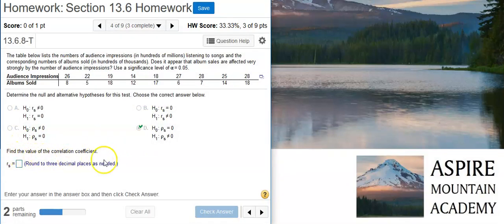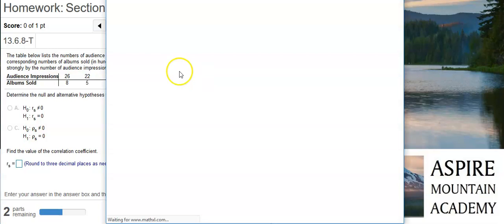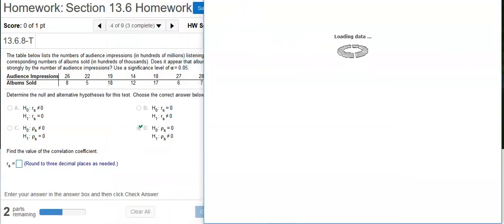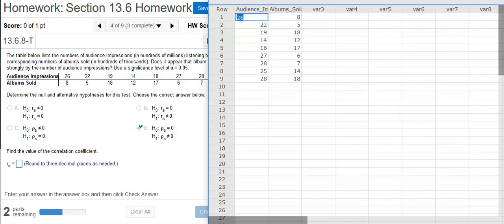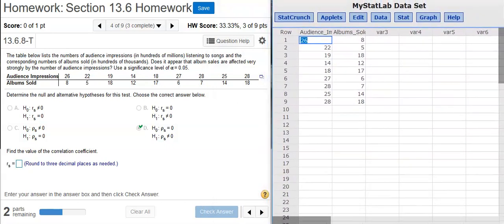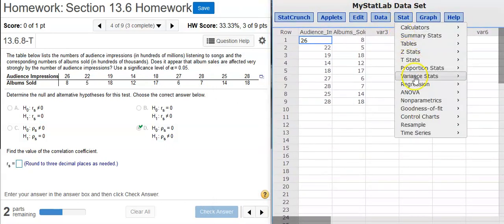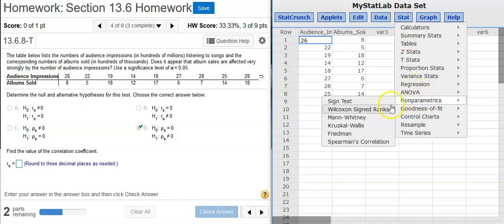Now the next part asks us to find the value of the correlation coefficient. To do that, we're going to take our data and dump it in StatCrunch. Okay, here we are in StatCrunch, and now I'm going to go to Stat, Non-Parametrics, Spearman's Correlation.